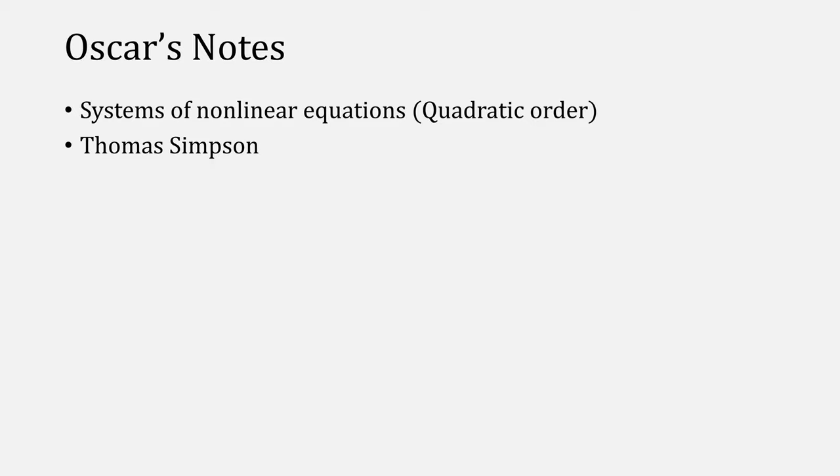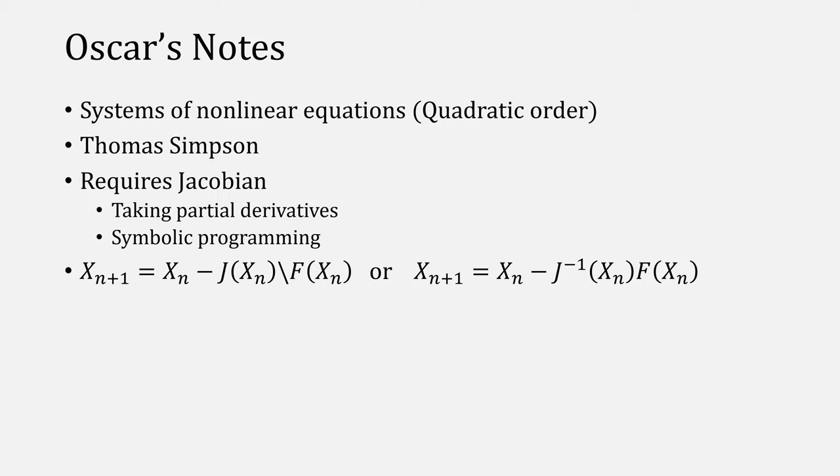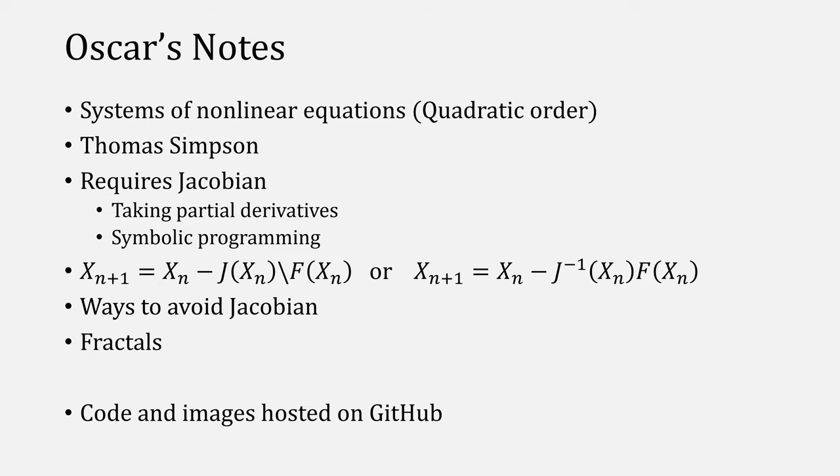Important takeaways of this video are that Newton's method can be generalized to solve systems of nonlinear equations with a quadratic order of convergence. There are also many attributions by Thomas Simpson, but the history of Newton's method probably requires its own video. The method also needs the Jacobian, which means partial derivatives, but you can use symbolic programming to help you out. Note the two versions of Newton's method, either solving a system or taking the inverse of the Jacobian, the choice is up to you. There are other methods that avoid using the Jacobian, but those require their own videos. You can also use Newton's method to create fractals.